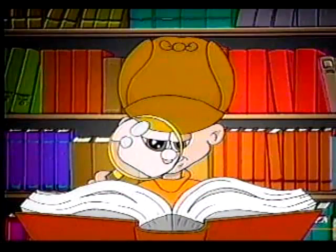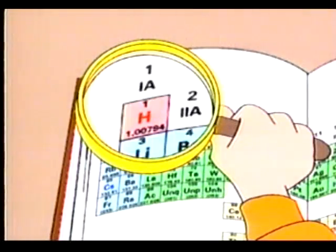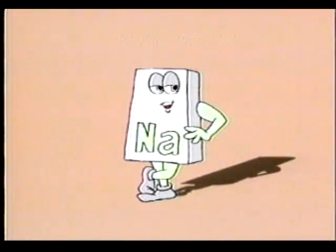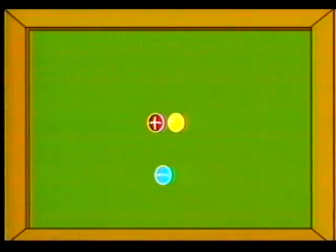Esto no le dice mucho a Sherlock. Sin embargo, le da una pista muy interesante al mencionar el número atómico. Los elementos están formados por átomos que contienen tres tipos de partículas: protones, neutrones y electrones. El número atómico representa la cantidad de protones que se encuentran junto con los neutrones en el centro o núcleo del átomo.